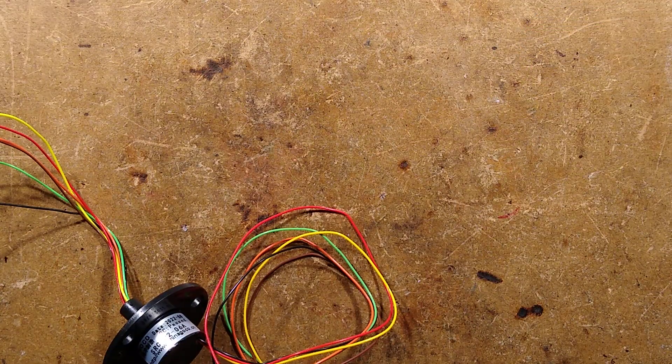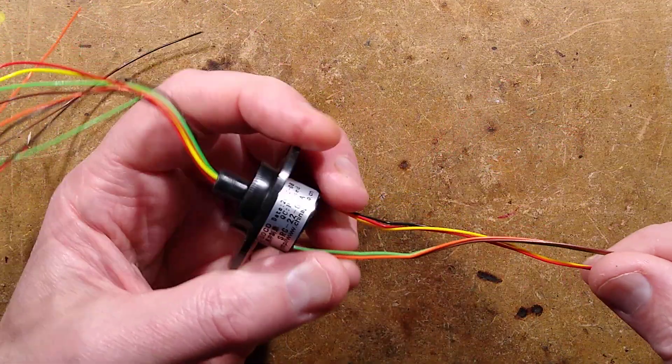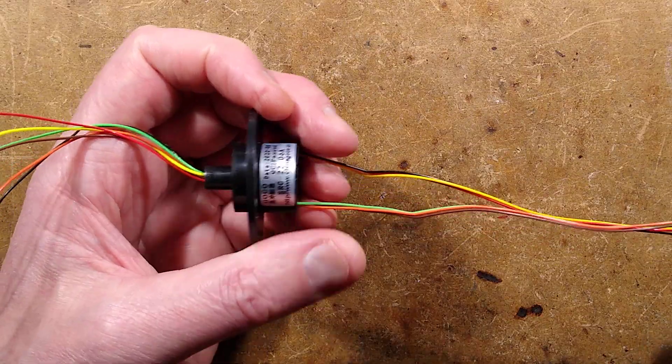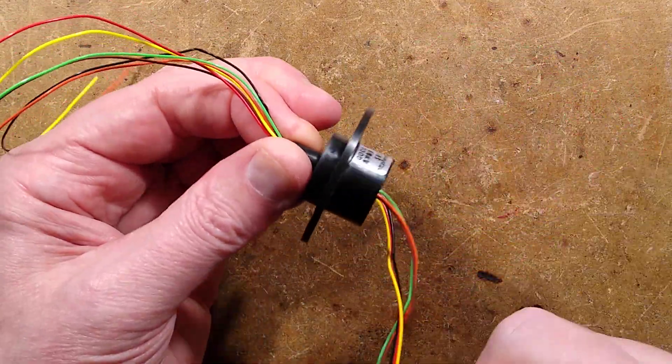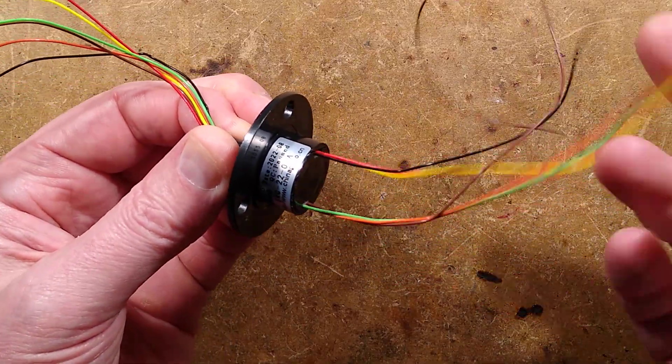The specifications for this are a little bit suspicious. They claim it's suitable for 220 volts AC. I'm not sure I'd really want to put mains through this. 250 RPM, which isn't hugely fast. 2 amps per circuit.